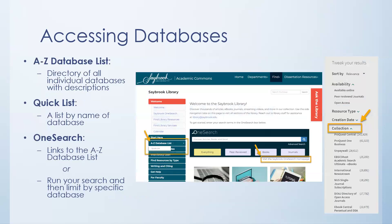You can get to the databases through a tab on the library website called the A-to-Z Database List. This opens in a new window and displays all of our databases by name. There is also a quick list by name without all the descriptive information. You can also use OneSearch and get to the A-to-Z database list there, or run a search in OneSearch and limit by a particular database.